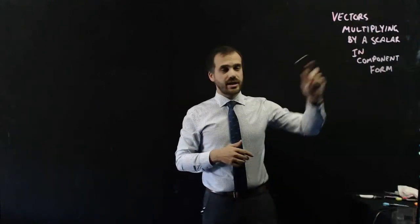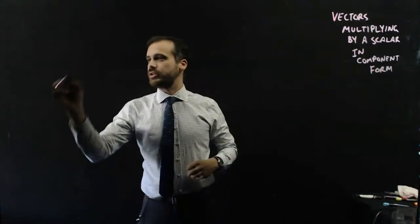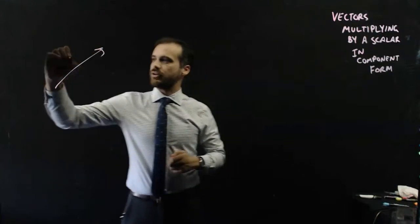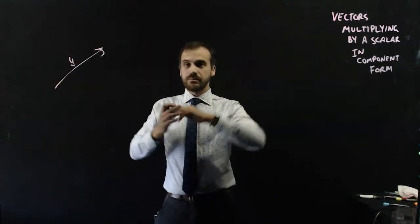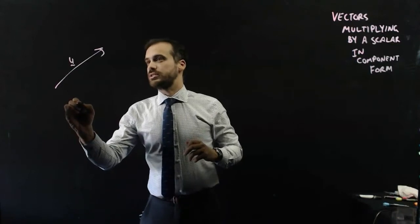So, vectors multiplying by a scalar in component form. What you already know is that a vector is an arrow, that's u, and if we want to multiply u by 2, it just gets twice as long.